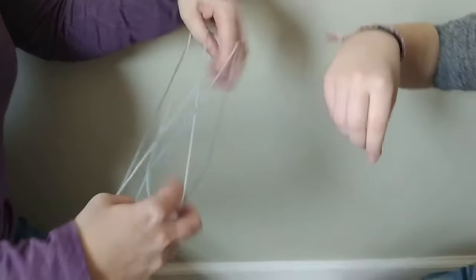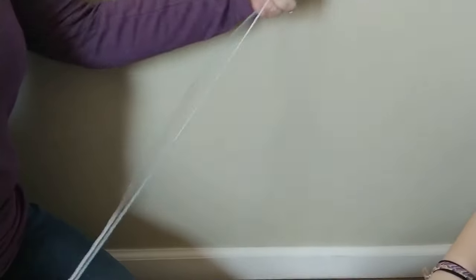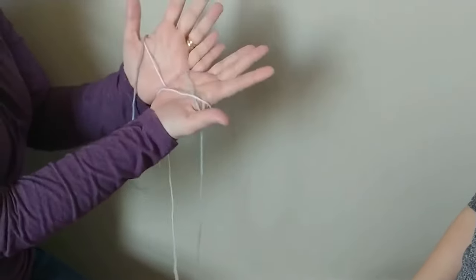We'll show you how to begin the game. Spread the yarn between your two hands, loop it around, and then you double loop it so that there's a string on each of your palms.